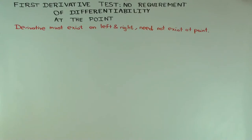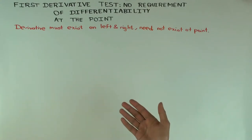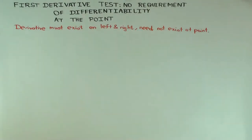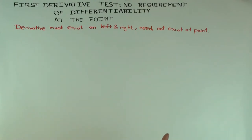For points you expect to be local max or min, the first thing you do is figure out all the critical points, because any point of local max or min is a critical point. Then you check each critical point using the first derivative test. The first derivative test can be applied to both types of critical points: where the derivative does not exist, and where it equals zero.